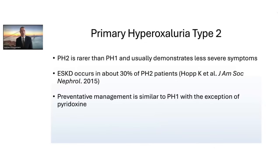Primary hyperoxaluria type 2 is more rare than PH1 and usually demonstrates less severe symptoms. However, about a third of patients with PH2 will ultimately develop end-stage kidney disease. Preventative management is very similar to PH1, including robust fluid intake and crystallization inhibitors. However, vitamin B6 has no role in the treatment of patients with primary hyperoxaluria type 2.